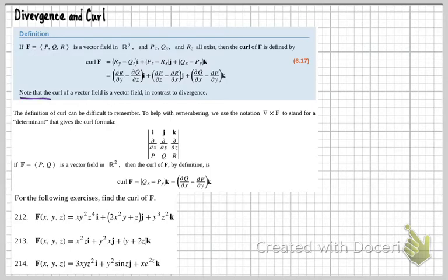Note that the curl of a vector field is a vector field in contrast to divergence. The definition of curl can be difficult to remember. To help you remember, we use the notation del cross f to stand for a determinant that gives the curl formula. So here's where it actually comes from.